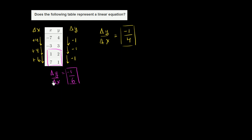x. Because we had a different rate of change of y with respect to x, or ratio between our change in y and change in x, this is not a linear equation. No, not a linear equation.